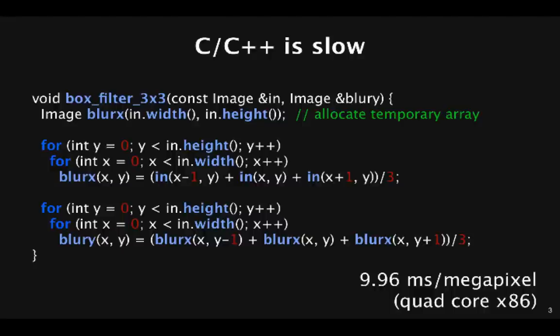First, let's look at why existing languages are insufficient for fast image processing. If we want to do a simple 3x3 box filter, we might write C++ code that looks like this. We've decomposed the filter into a horizontal blur, which reads and averages three points from the input, and then a vertical blur, which reads and averages three points from our intermediate result, which we store in a temporary image.